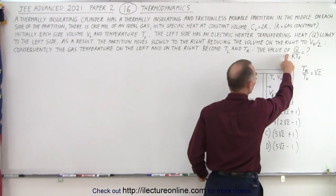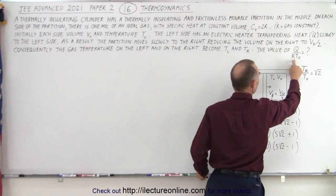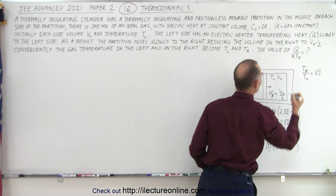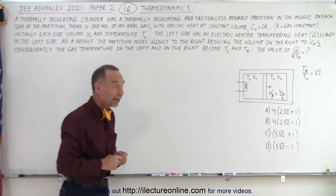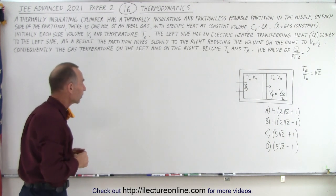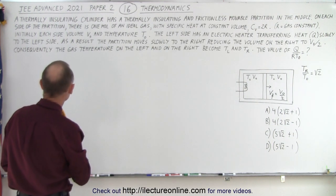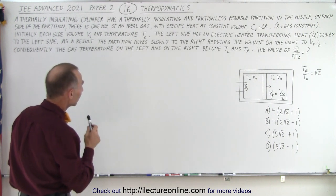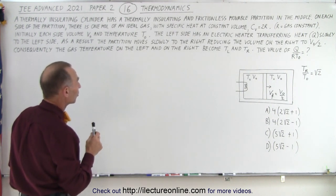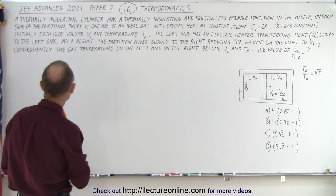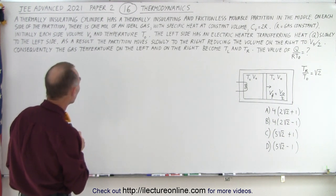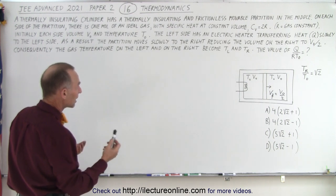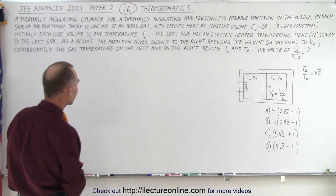Now they're looking for the ratio of Q divided by R times T sub nought. Let's read the problem again to re-familiarize ourselves. A thermally insulating cylinder has a thermally insulating and frictionless movable partition in the middle. On each side of the partition there is one mole of an ideal gas with specific heat at constant volume, C sub V equals 2R, where R is the gas constant.